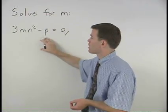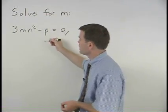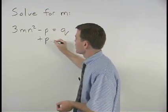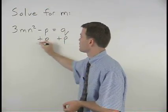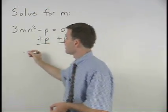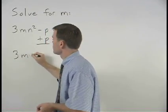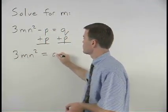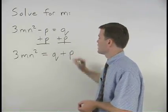So we start by adding p to both sides of the equation. And we have 3mn squared equals q plus p.